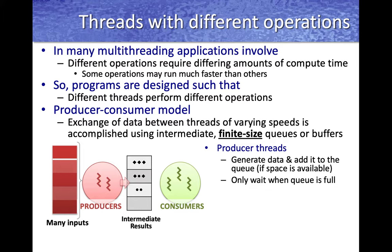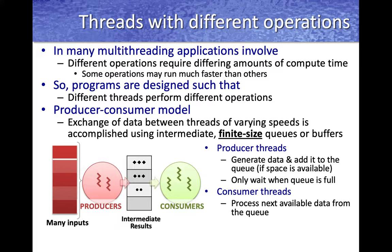Producer threads wait when the queue is full. On the other hand, consumer threads keep removing items from the shared queue and start processing them further. They keep processing as and when intermediate results are available, but consumers will have to block and wait if the intermediate queue is empty. This is the core idea of the producer-consumer pattern.